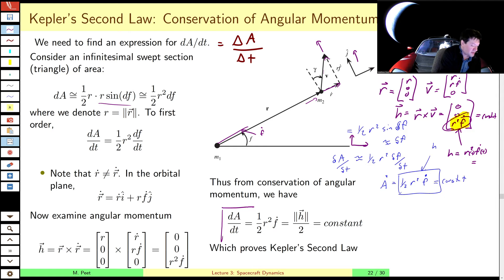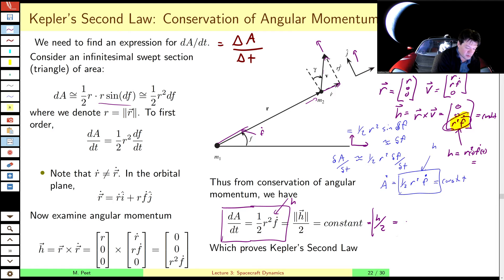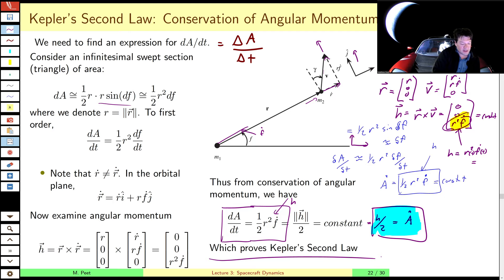We have the expression for A-dot, which is one-half r squared f-dot, and we just proved that this term equals the angular momentum. So the rate of sweep of area equals the angular momentum divided by two, which is a constant. This establishes Kepler's second law: equal areas are swept out in equal times, regardless of where you are on the orbit. It's a very nice result.